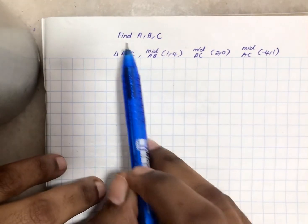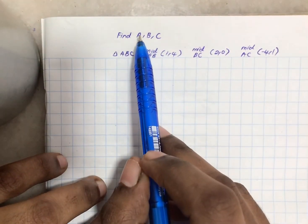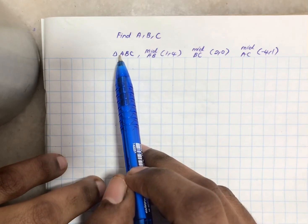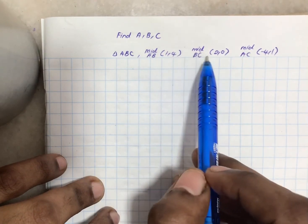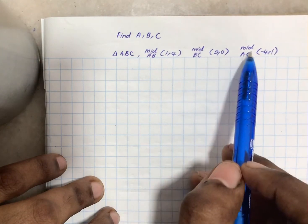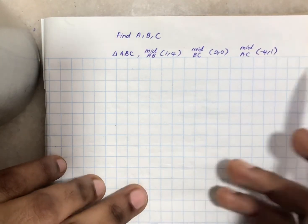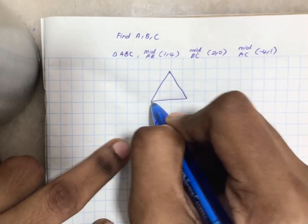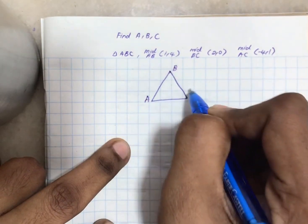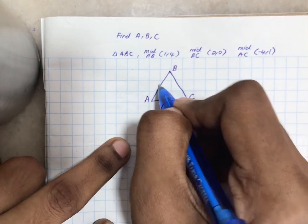The question says we have to find the vertices A, B, C for a triangle where we know the midpoint of AB is given as (1,4), midpoint of BC is (2,0), and midpoint of AC is (-4,1). So let's simply do a sketch for triangle ABC.